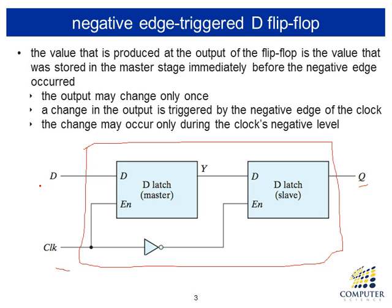Whatever changes happen on D input over the entire device, the output does not change. When the clock is high, the first latch is enabled so that the output Y changes according to the input D. But because of the inverter, the second latch is disabled, so even if Y changes according to input D, the ultimate output Q does not change. So when the clock is either low or high, the entire flip-flop does not work.